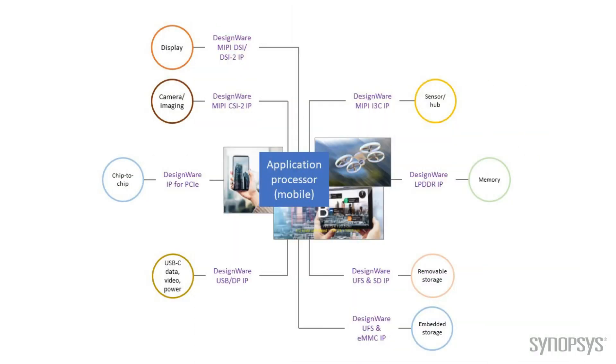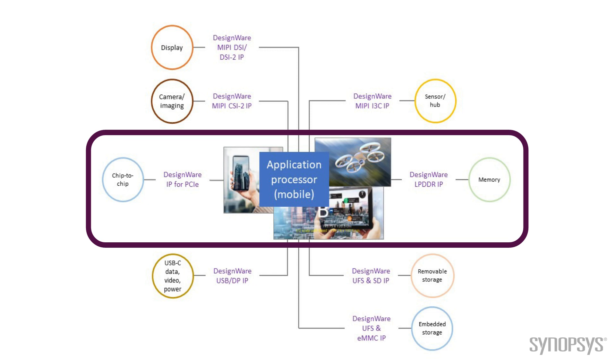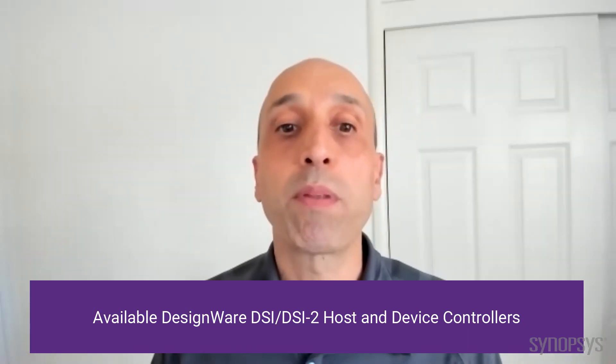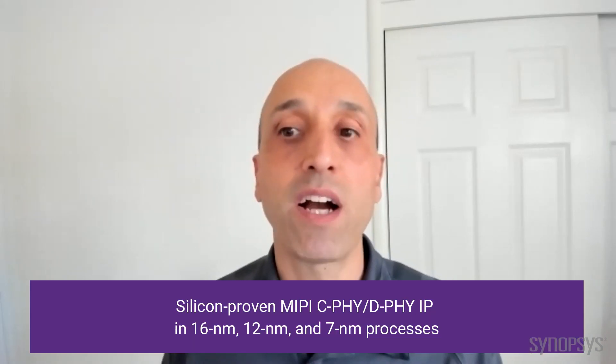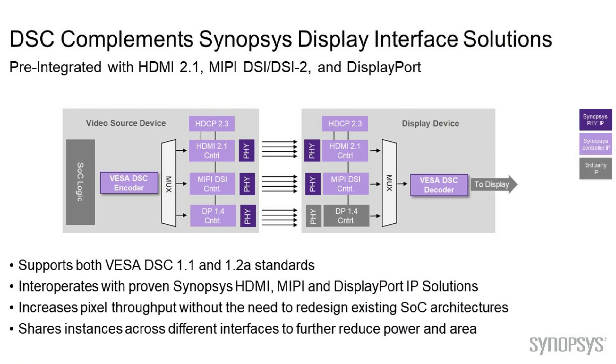The diagram shows a typical high-end application processor targeting mobile phones and drones. There are basic functionalities such as chip-to-chip and memory connectivity that are satisfied by PCI Express and DDR interfaces. For embedded displays, MIPI DSI and DSI2 on D-PHY is the common interface used to implement higher bandwidth, higher refresh rates, and support multiple displays. VESA DSC is offering visually lossless compression, used with MIPI DSI and DSI2 to reduce transmitted bandwidth and system implementation cost.